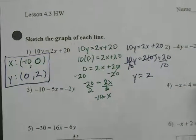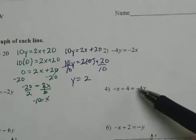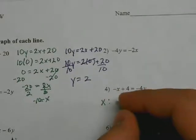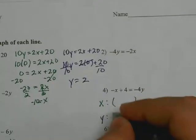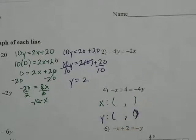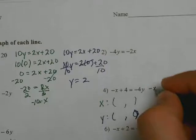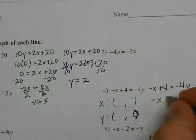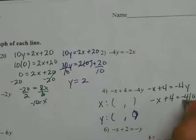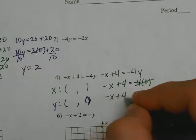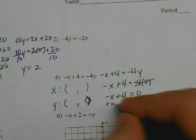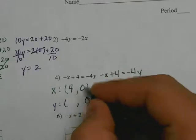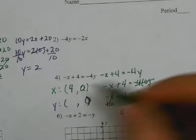Now looking at number 4: negative x plus 4 equals negative 4y. I need to solve for the x and y intercepts. To solve for the x intercept, I rewrite the problem — negative x plus 4 equals negative 4y — and substitute 0 in for y. So negative x plus 4 equals negative 4 times 0, which cancels, leaving negative x plus 4 equals 0. I add x to both sides, leaving me with 4 equals x. My x intercept is 4 comma 0, because when y is 0, x is 4.